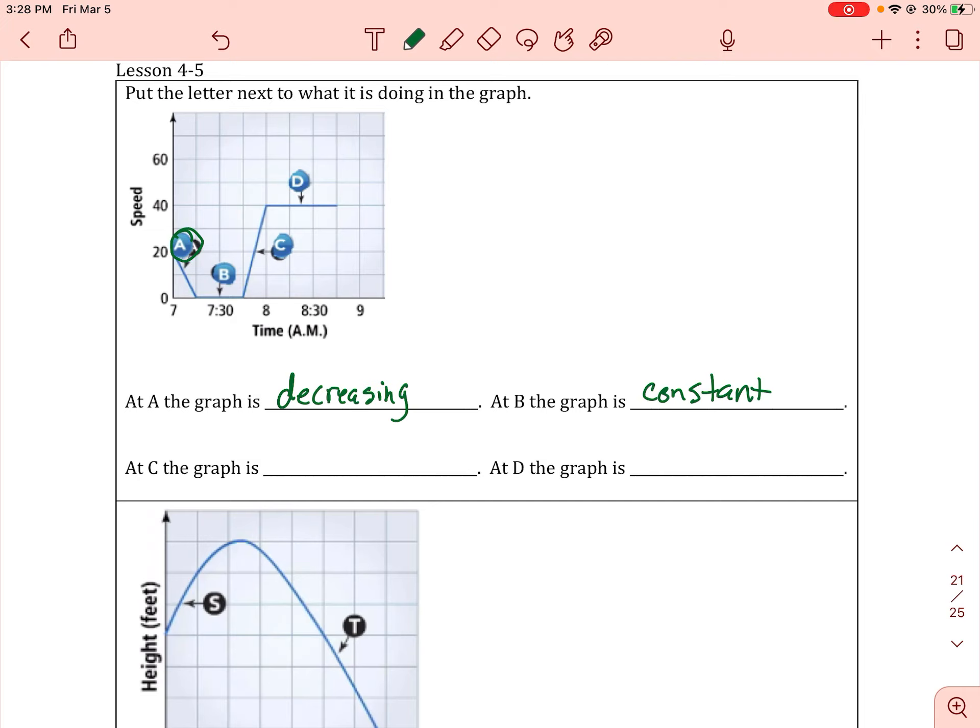And then C, the graph is increasing. And at D, it is again, remaining constant.